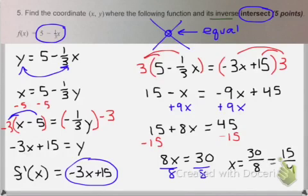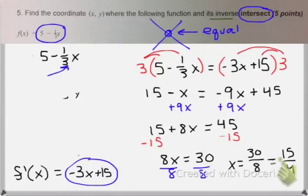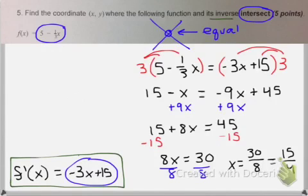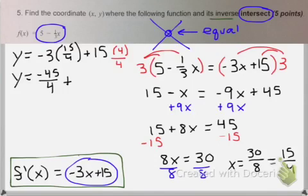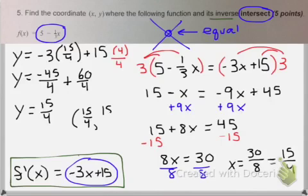I have my x value, but I also need to find my y value. I can do that by substituting into either equation. I'm going to pick my inverse equation because it's easier to work with. I'm going to substitute 15 fourths into this equation. So y equals negative 45 fourths plus, I can turn this into fourths by multiplying by 4 over 4, so that becomes 60 fourths. I get y equals 15 fourths as well. My intersecting point is 15 fourths, 15 fourths.